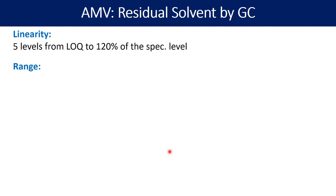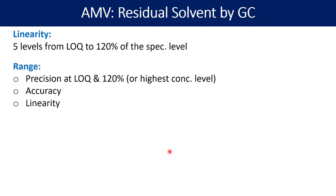The range is determined using three parameters: precision, accuracy, and linearity. For precision as part of range, you confirm repeatability at the lowest level (LOQ) and at the highest level (120%). Prepare six solutions at LOQ and six at 120%, and calculate the relative standard deviation. Intermediate precision and reproducibility are not needed — only repeatability is sufficient for the range parameter. Accuracy and linearity data are taken from the respective studies already conducted.